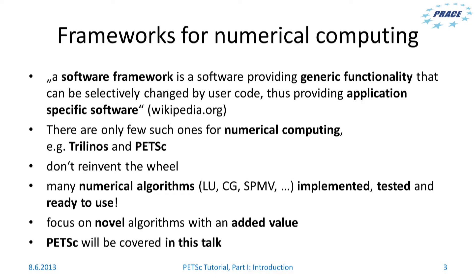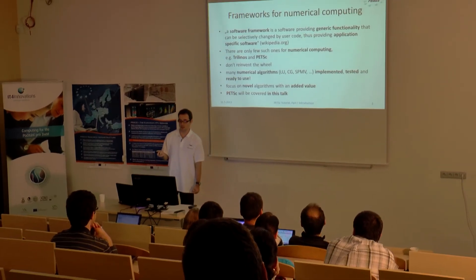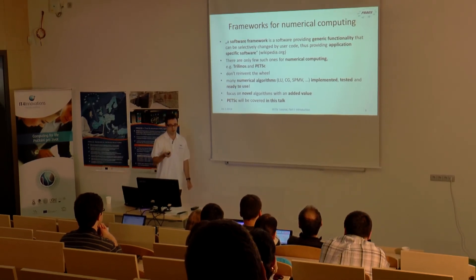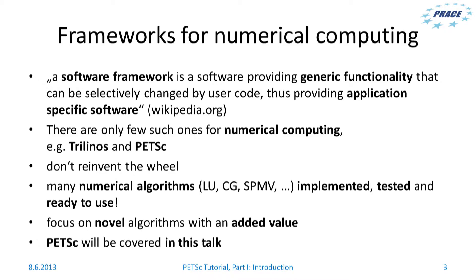A software framework is a software product which provides generic functionality that can be effectively changed by user code. There are software frameworks for numerical computing, but they are quite rare — there are only a few of them. From my point of view, there are two most well-known frameworks for numerical computing: Trilinos and PETSc. The advantage is that they allow focusing on your specific know-how and added value, while not reinventing the wheel or bothering with standard algorithms like conjugate gradients, LU factorization, or sparse matrix-vector product.